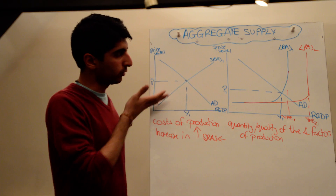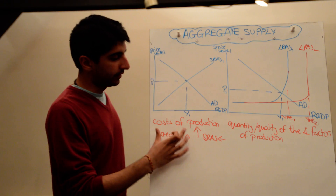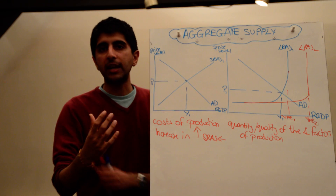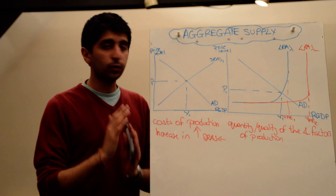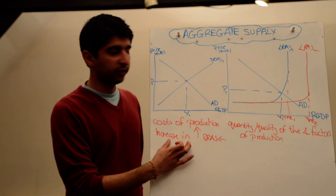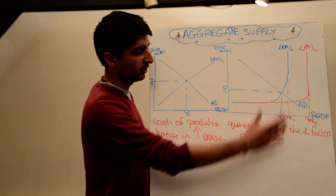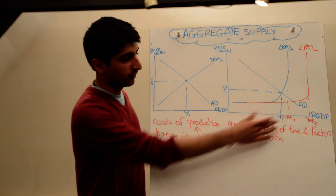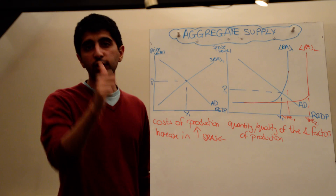So LRAS is all about the quantity and quality of factors of production. Short-run aggregate supply, drawn as a simple upward slope, is determined by changes in the cost of production. There are four reasons why SRAS might shift, and lots of reasons why LRAS may shift. As long as these are the reasons why you're shifting the curve, you'll be fine.